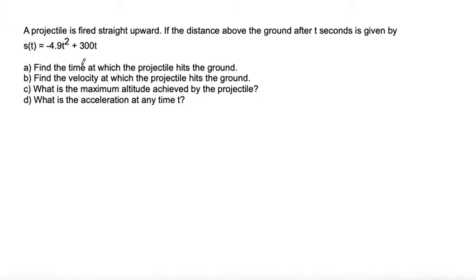Part a, find the time at which the projectile hits the ground. Okay, so to find the time at which the projectile hits the ground, if the distance above the ground is s, then that means when s equals 0, that would be when the projectile hits the ground.